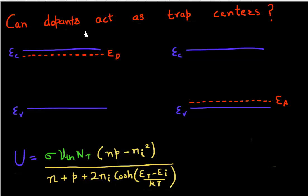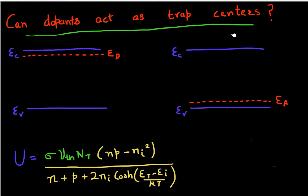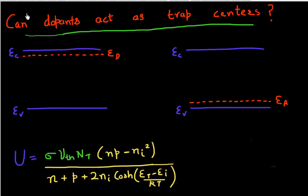In this video, I want to pose you this question — one that has caused many sleepless nights across many generations of inquisitive students learning about semiconductor physics for the first time. The question is: can dopants, can donors and acceptors, act as trap centers for generation and recombination?